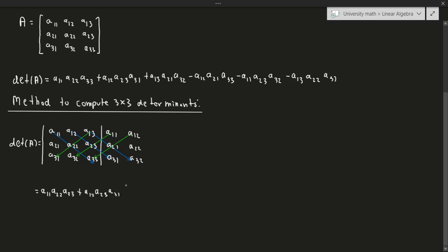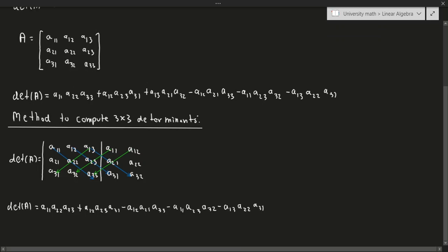Then we subtract in the direction of the green arrows, still multiplying the entries. So minus A12·A21·A33, minus A11·A23·A32, minus A13·A22·A31. This is a more algorithmic way of getting the determinant of a 3x3 matrix, rather than memorizing that entire huge formula.